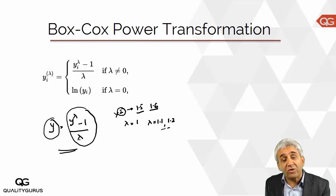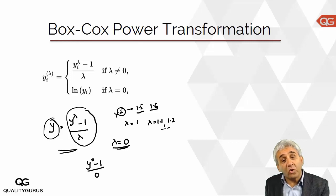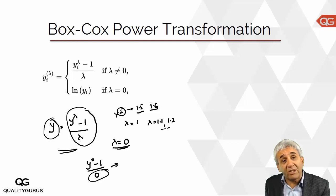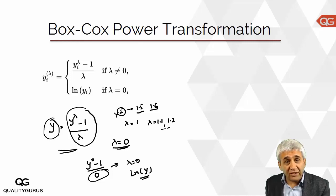This is your Box-Cox power transformation formula. There is one exception: when the software decides lambda equals 0, you cannot compute Y to the power 0 minus 1 divided by 0, because anything divided by 0 becomes indeterminate. So when lambda equals 0, the software uses the natural logarithm of the number instead.